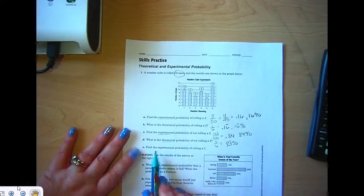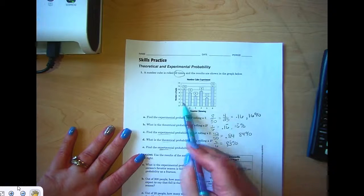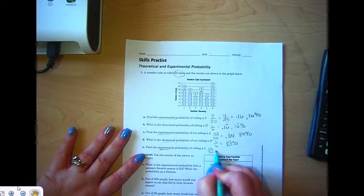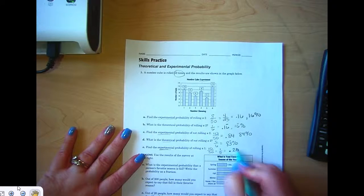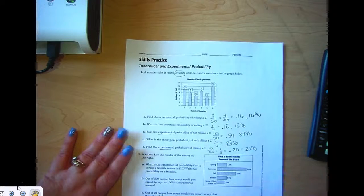Find the experimental probability of rolling a 1. Since it's experimental, we're going to use this experimental data: 10 out of 50, which equals 1/5, which equals 20 hundredths, which equals 20 percent.